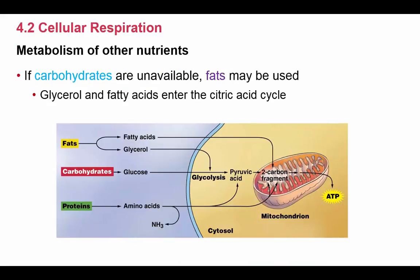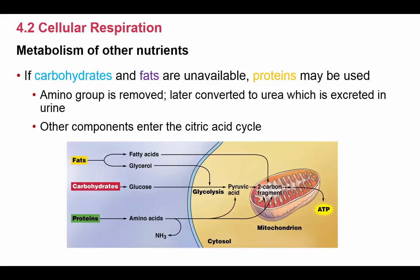Glucose is the primary fuel for cellular respiration, but if carbohydrates are unavailable, fats can also be used to produce ATP. Fats are our long-term energy storage and can be broken down to give off energy, though carbohydrates are the first choice. If carbohydrates and fats are both unavailable, proteins can also be used, though they are the last resort since they serve many other functions in the cell.